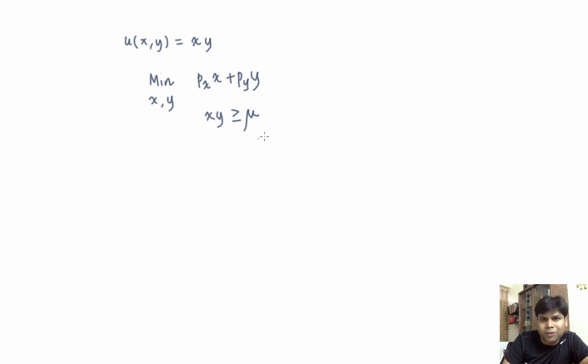So again, we're going to just plot the constraint first. Notice that the constraint is going to look like this. This is the indifference curve corresponding to mu level of satisfaction, and this is the set of all bundles that gives the individual at least mu level of satisfaction. Now, what we're going to do is plot iso-expenditure curves and pick the point in this region that minimizes the expenditure, which corresponds to the lowest possible iso-expenditure curve that passes through this region.